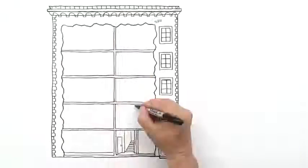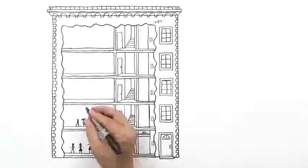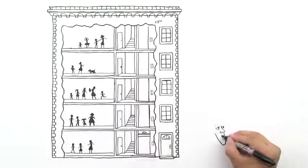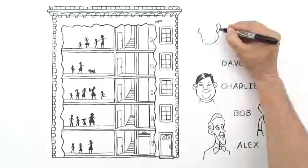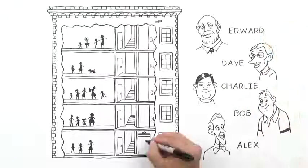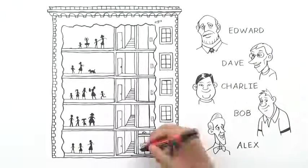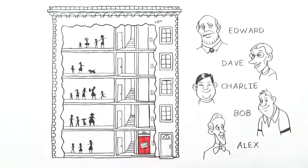Imagine there is a five-story condominium with one family living on each floor: Alex and his family, Bob, Charlie, David, and Edward with their families. The building has a single little red elevator. That's me. And I've been broken for some time now. And here's why.